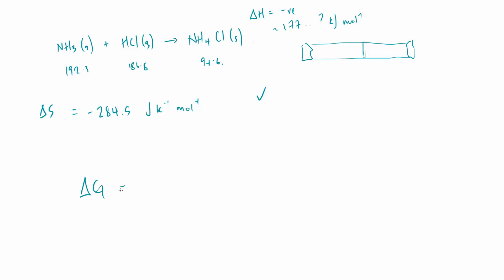That equation is: delta G equals delta H minus T delta S. Delta G is called Gibbs free energy and has units of kilojoules per mole. Delta H is our enthalpy change, also in kilojoules per mole. T is temperature in Kelvin, and delta S is our entropy change in joules per Kelvin per mole. If doing calculations, we need to convert delta S into kilojoules by dividing by 1000, so the units are consistent — otherwise numbers will be a factor of 1000 out.